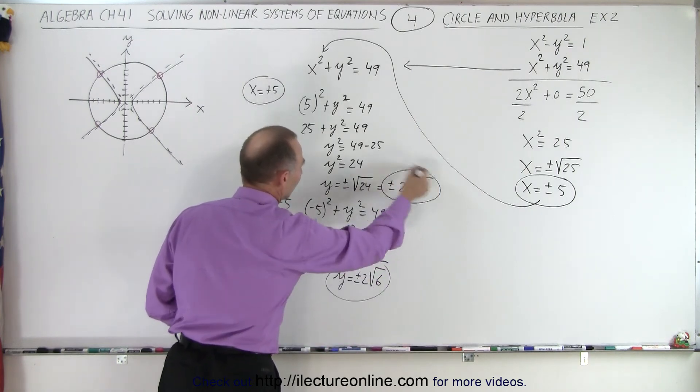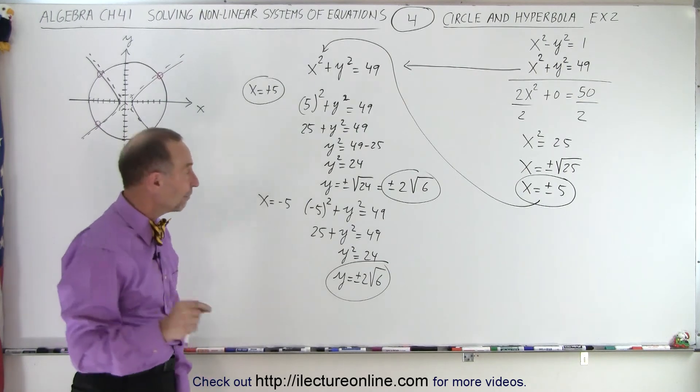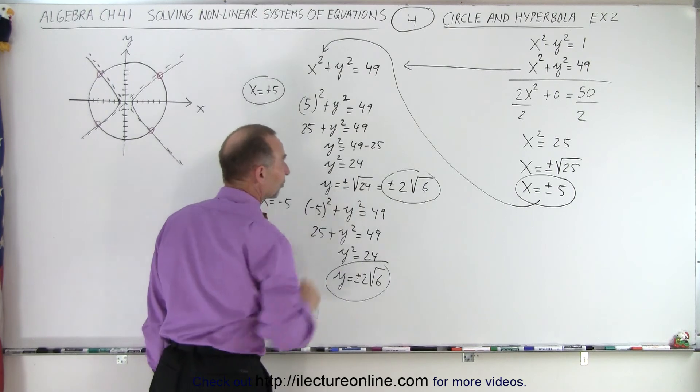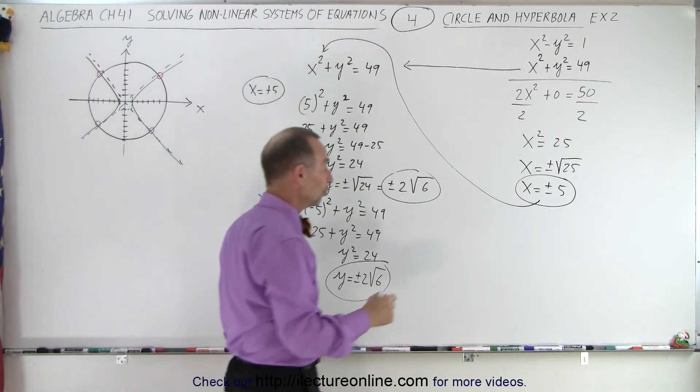The same exact solution that we had over there. So for every possibility of 5, we have 2 possibilities. For x, we have 2 possibilities for y. Which means the 4 solutions are,